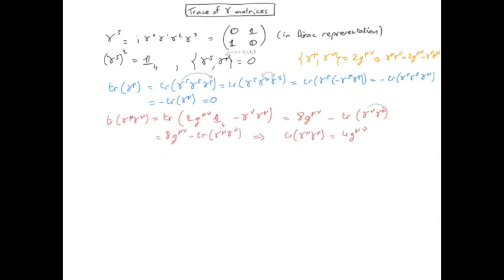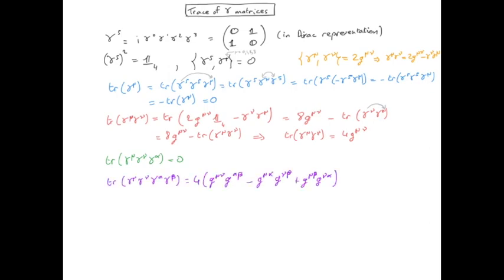We can show in a similar way that the trace of three gamma matrices, or more generally the trace of an odd number of gamma matrices, is always 0. And the trace of four gamma matrices can be computed similarly, and the trace will be 0 under appropriate conditions.